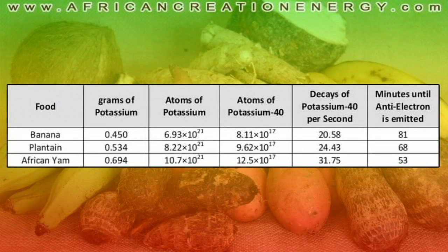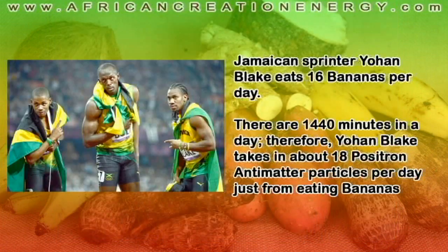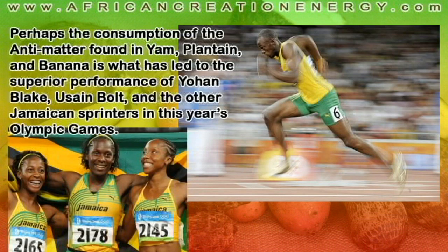When we look at our table of the three potassium-rich substances we just analyzed, we find that the average African yam emits a positron particle of antimatter the most frequently, followed by the plantain, followed by the banana. The Jamaican sprinter Johan Blake says he eats 16 bananas per day — for more energy and to replenish potassium lost in training. If we do a calculation, there are 1,440 minutes in a day, so Johan Blake takes in about 18 positron particles of antimatter per day just from eating 16 bananas. Perhaps the consumption of the antimatter found in yam, plantain, and banana led to the superior performance of Johan Blake, Usain Bolt, and the other Jamaican sprinters at this past year's Olympic Games.